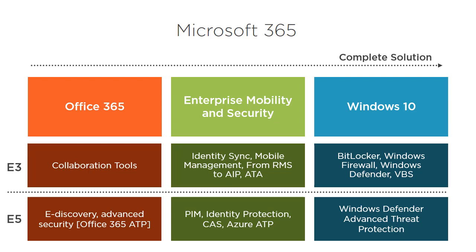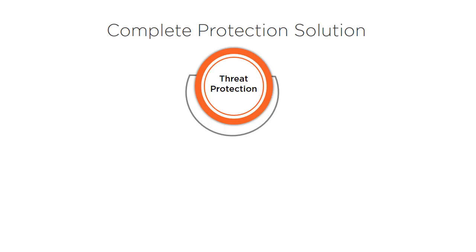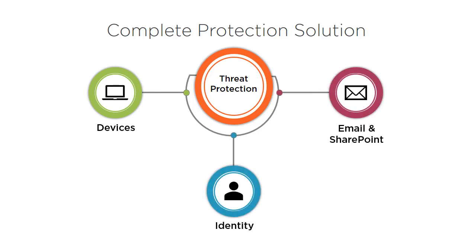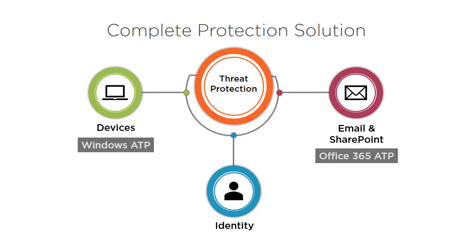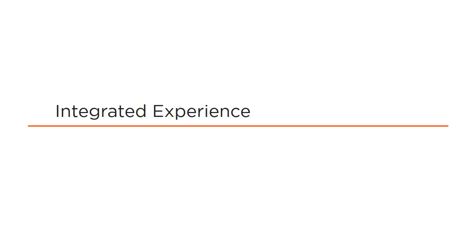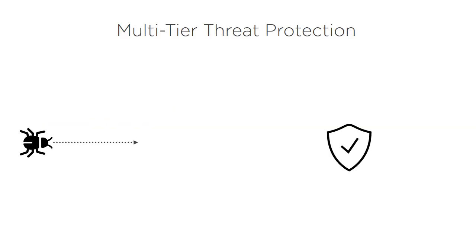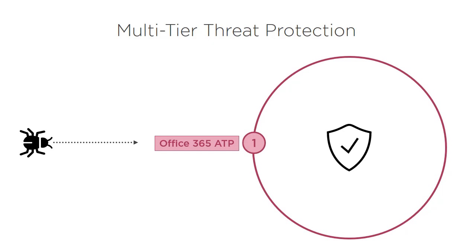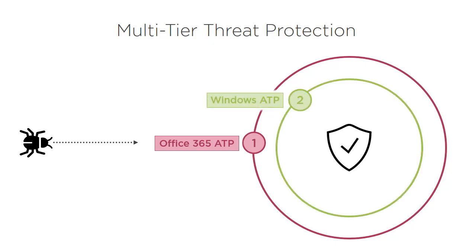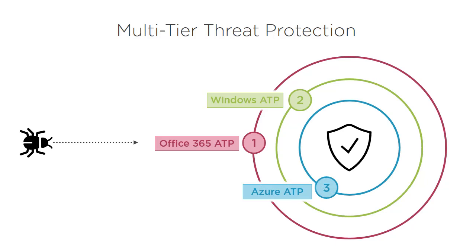Let us focus on the threat protection solutions in Microsoft 365. It is a complete solution that covers devices, email and SharePoint, and corporate identities. Windows ATP protects Windows devices, Office 365 ATP is a threat protection service for Office 365, and Azure ATP is threat protection for identities. I like to think of Office 365 ATP as the first line of defense, as most attacks come in the form of phishing email or an infected email attachment. If the attacker bypassed Office 365 ATP, then Windows ATP is the next level of protection. If the attack bypassed both, then Azure ATP can help you detect the existence of an attack by detecting unusual behaviors and privilege escalations.